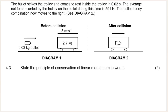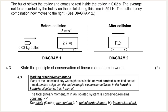Question 4.3 wants you to state the principle of conservation of linear momentum in words — that's a definition you need to learn. It's very important that you say 'the total linear momentum' — 'total' is very important — 'in an isolated system remains constant or is conserved.' All the underlined words: if you leave them out, you will get minus one mark. Rather just learn the definition off by heart.